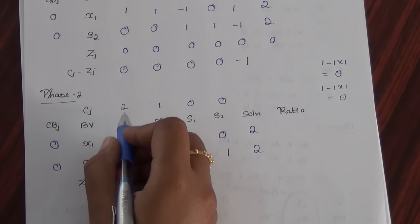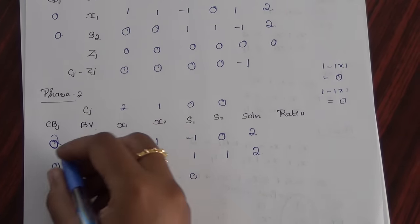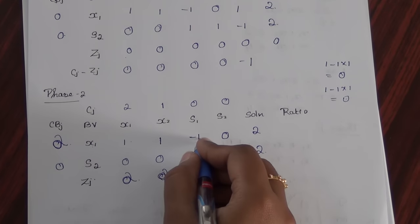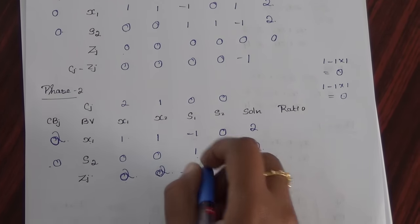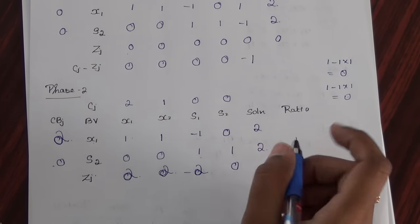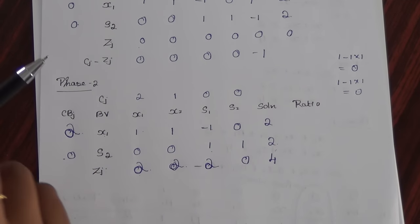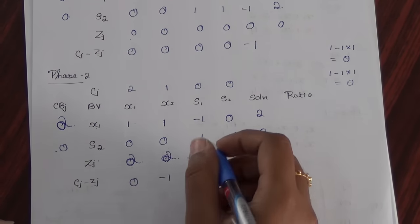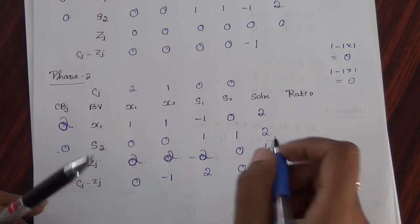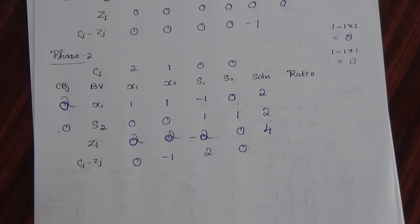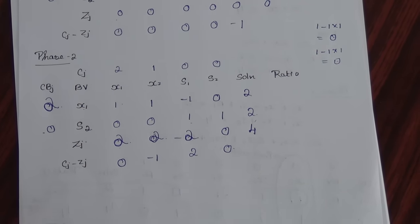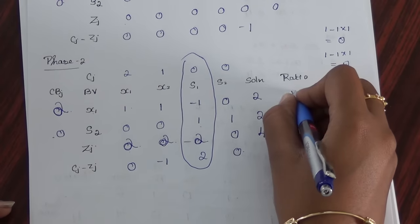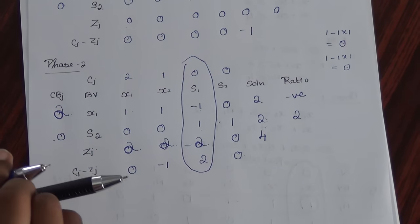Since the coefficient of x1 is 2, I replace cbj with 2. Now Zj: 2 times 1 plus 0 times 0 gives 2 for x1. For x2: 2 times 1 is 2. For s1: 2 times minus 1 plus 0 times 1 gives minus 2. For s2: 0. Solution Zj: 2 times 2 plus 0 times 2 gives 4. Then cj minus zj: 2 minus 2 is 0; 1 minus 2 is minus 1; 0 minus minus 2 is plus 2; 0. The positive value is 2, so that column is my pivot column. Ratio: 2 by minus 1 is negative, and 2 by 1 is 2. Least positive is 2, so that is my pivot row.